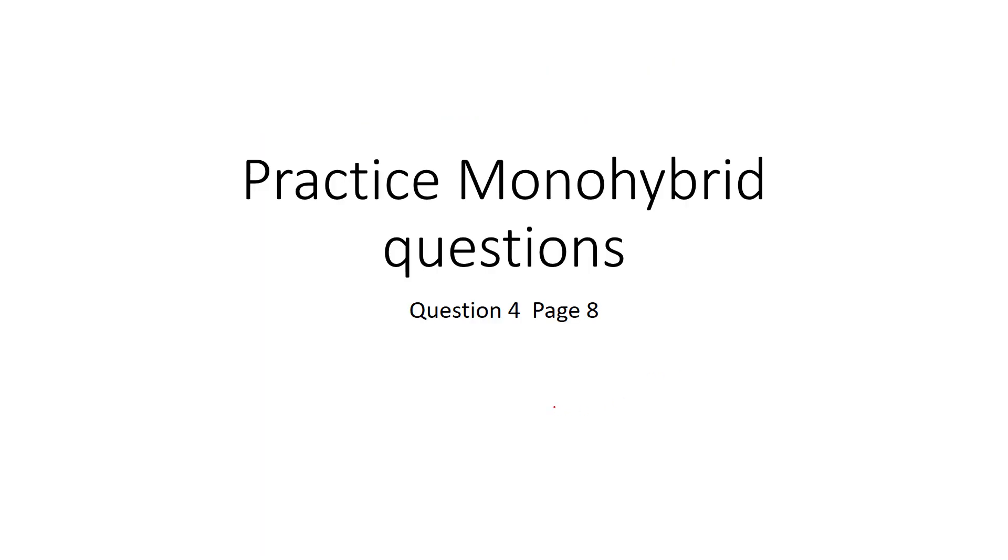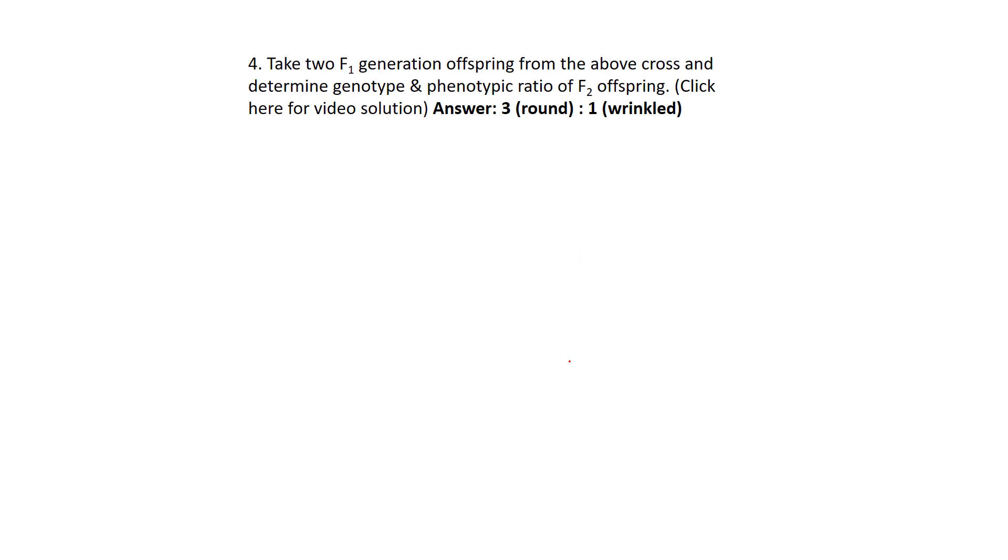Okay, monohybrid question number four, page eight. It says take two F1 generations and we're saying from the, it says above here, but we know from the previous question number three.